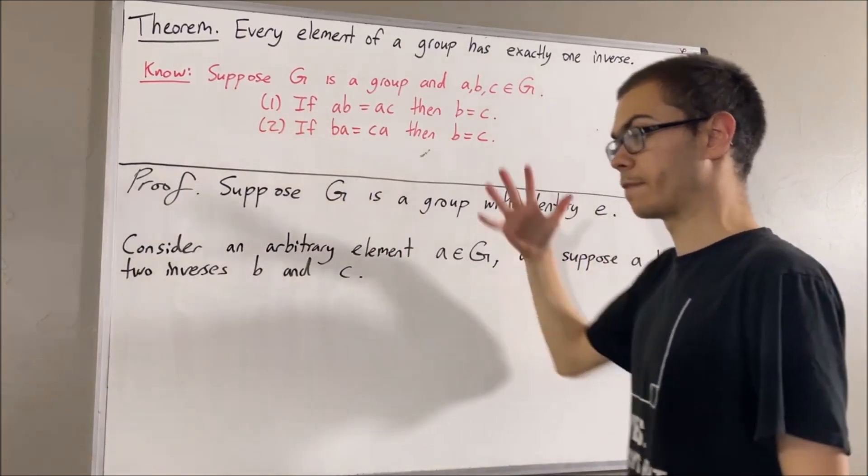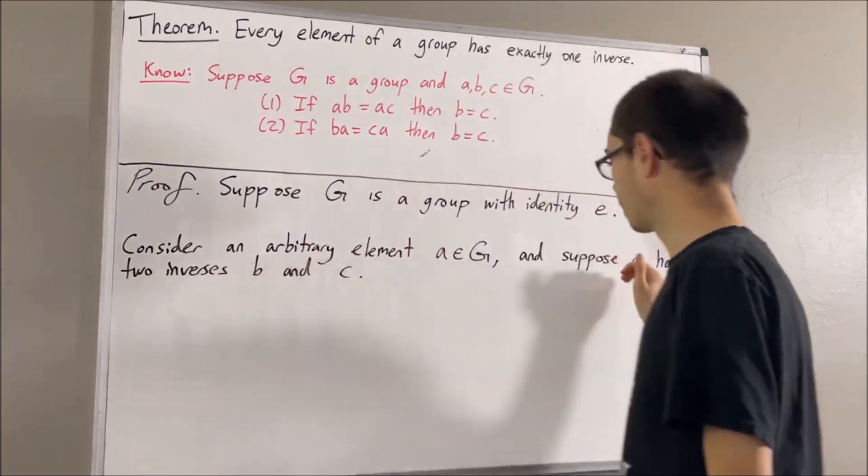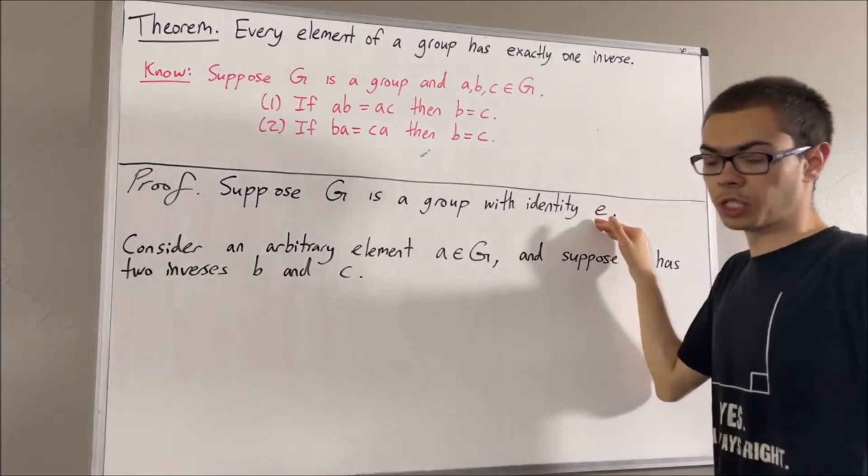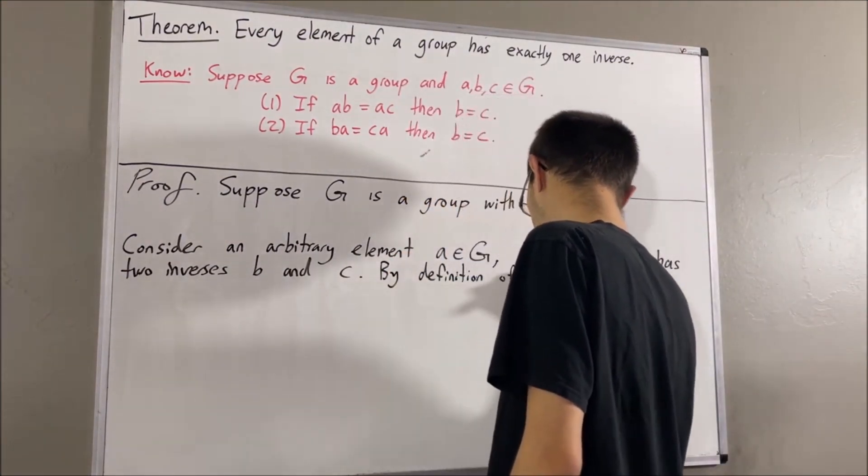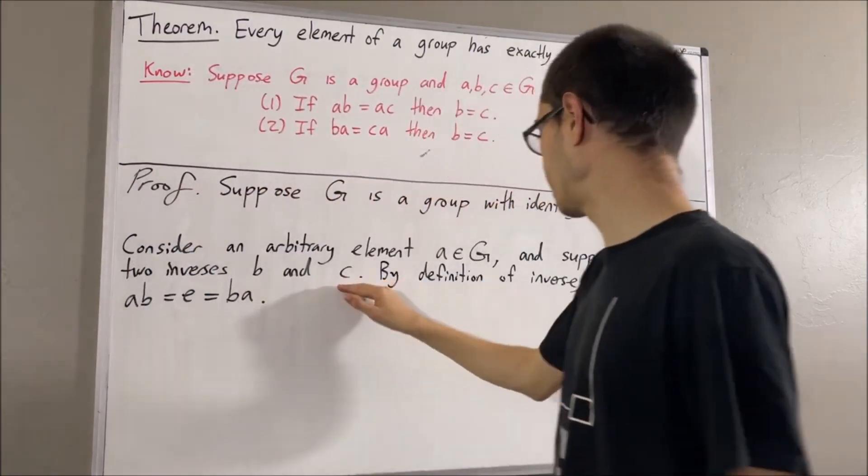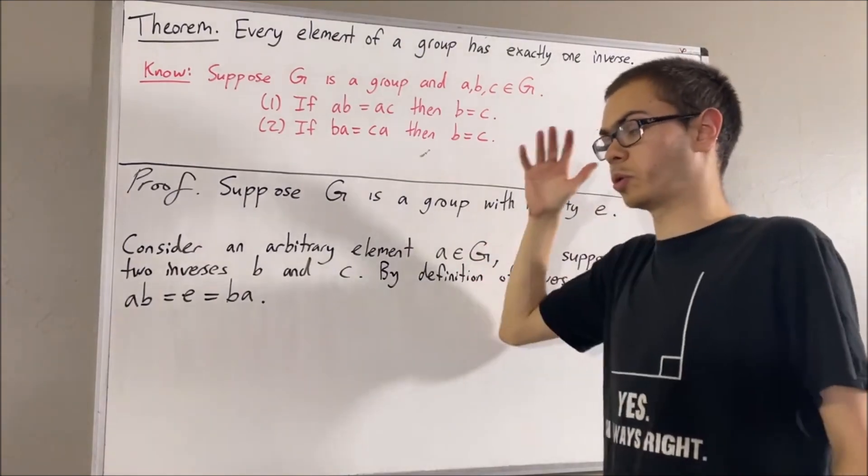Well, by definition of inverse, to say that b is an inverse of a means that ab equals e, which equals ba. Similarly, since c is an inverse of a, this means that ac equals e, which equals ca.